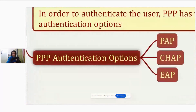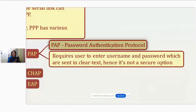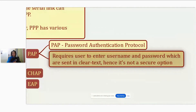In order to authenticate the user, PPP has various authentication options. These are the three authentication options provided by PPP: PAP, CHAP, and EAP. Let's talk about PAP first. PAP stands for Password Authentication Protocol. It is a very simple protocol and not a very secure option, because it requires the user to enter a username and password which are sent in clear text. Hence it is not a secure option - it's a very old option which is not even supported by a lot of devices these days.